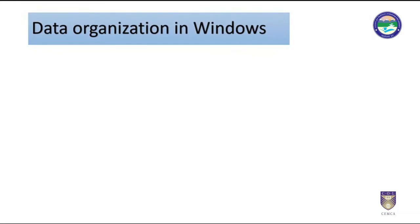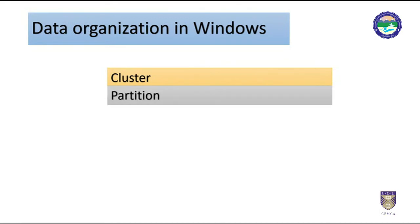Windows organizes data using the following structures. A cluster is a group of sectors — typically clusters can be 32KB — and they use a logical representation of sectors. Partitions are logical divisions of physical storage. Large physical storage needs to be partitioned into smaller sizes so that the operating system can use each partition as a separate entity. However, smart users hide data into hidden or temporarily deleted partitions.